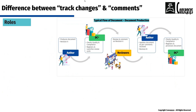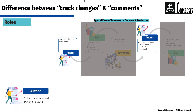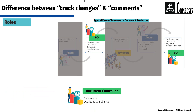Looking at this process in terms of roles, we have the author who is a subject matter expert in the topic covered in the document and is also usually the document owner. The document controller's role is that of a gatekeeper, checking the quality and compliance of documents and making sure that only compliant documents go through the process. Non-compliant documents are rejected back to their originator — in this case, the author.